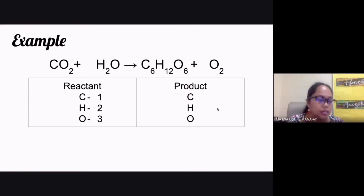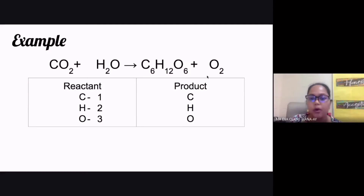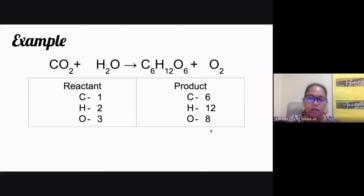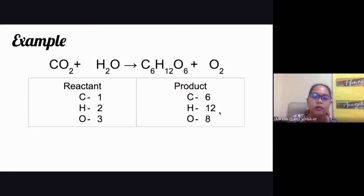On the product side: there are six atoms of carbon, twelve atoms of hydrogen, and a total of eight atoms of oxygen — that's six plus two — giving us eight atoms of oxygen. So for the product side: carbon has six, hydrogen has twelve, and oxygen has eight.